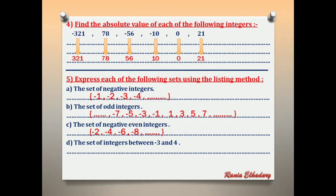Letter D: the set of integers between negative 3 and 4. The integers are: negative 2, negative 1, 0, 1, 2, 3.